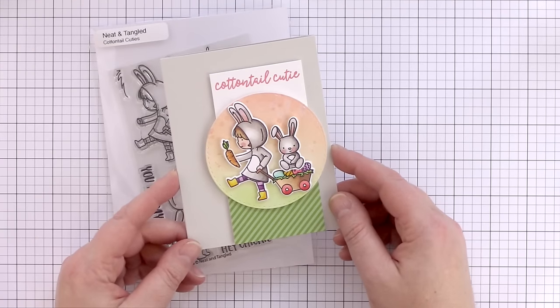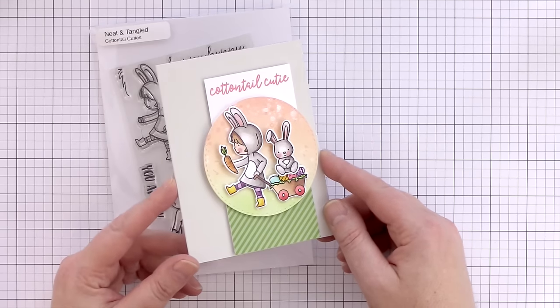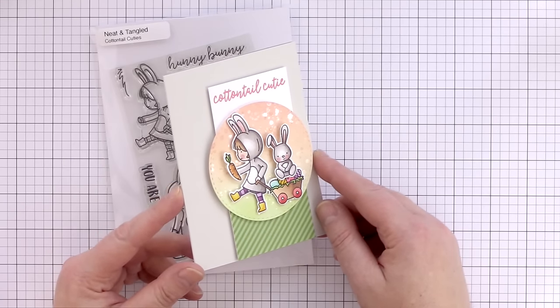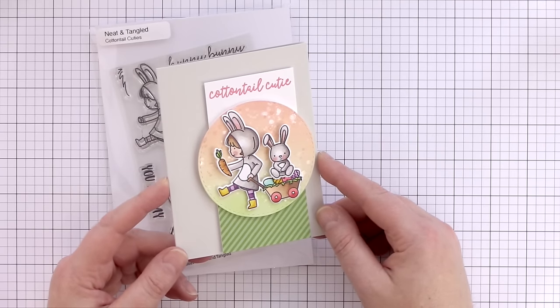For my card for the Neat and Tangled sneak peeks, I used Copics to color the little girl with her basket of eggs with a bunny popped on top and holding a carrot treat for the rabbit, and I mounted these on a sparkly ink-blended circle.